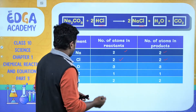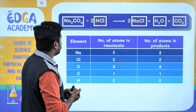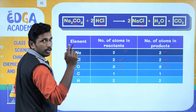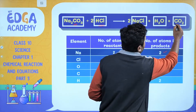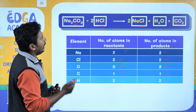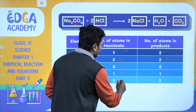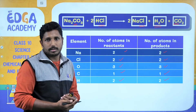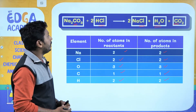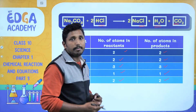Sodium and oxygen are already balanced. For carbon: 1 atom on the left and 1 on the right — balanced. For hydrogen: 2 atoms on the left (from 2 HCl) and 2 on the right (from H2O) — balanced. All elements are balanced on either side, so the balanced chemical equation is: Na2CO3 + 2 HCl gives 2 NaCl + H2O + CO2.